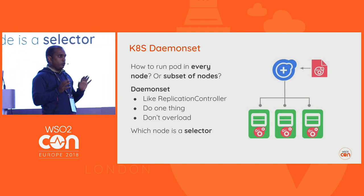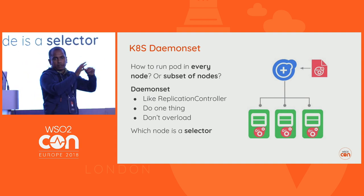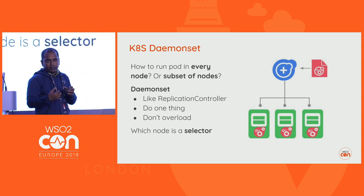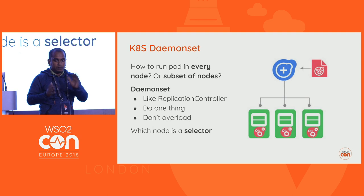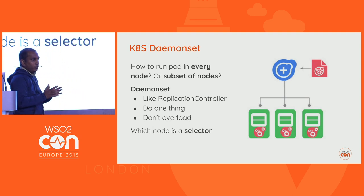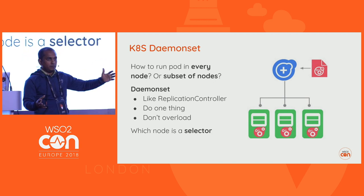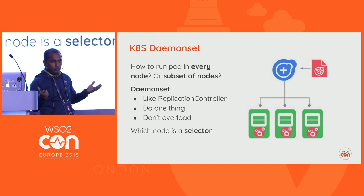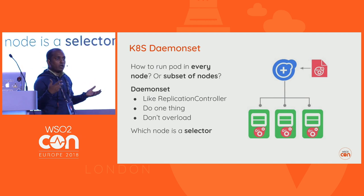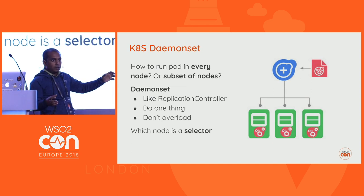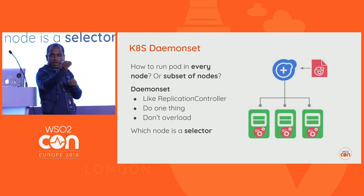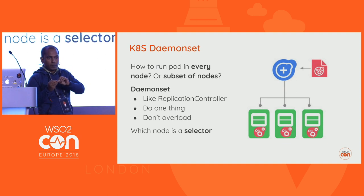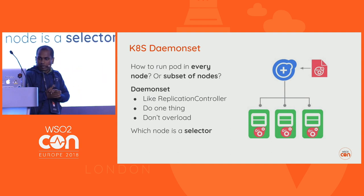The Daemon Set is another concept. Normally Kubernetes schedules Pods across nodes based on resource availability. But sometimes you want to deploy an application on every node — for example, a monitoring agent or a log aggregation agent. Using a DaemonSet ensures that when you deploy, the application is deployed across all nodes in the Kubernetes cluster.